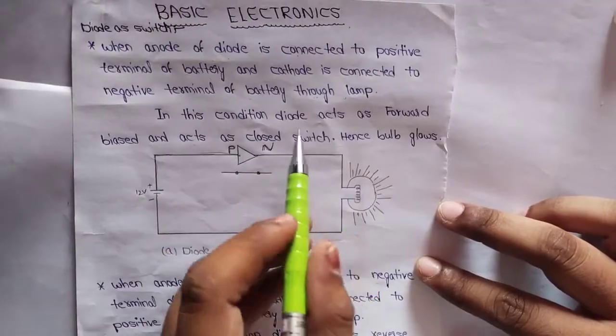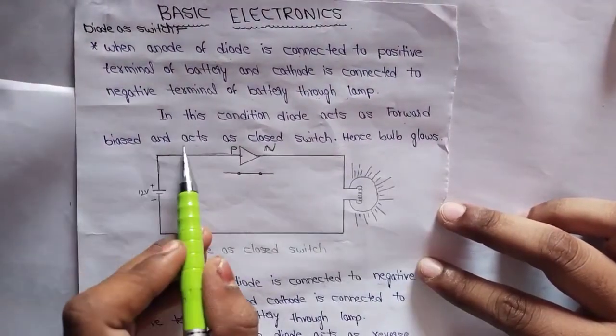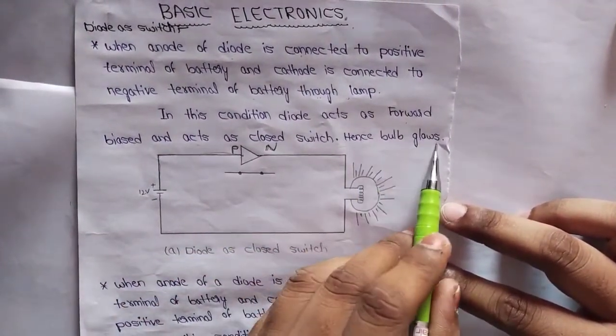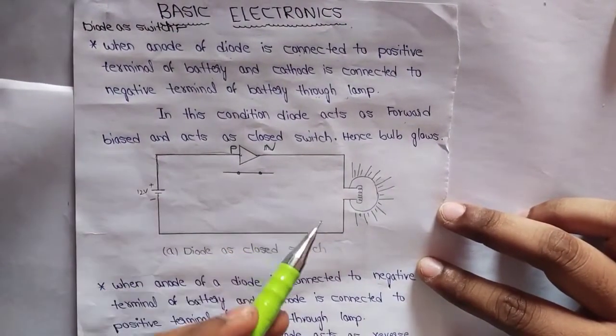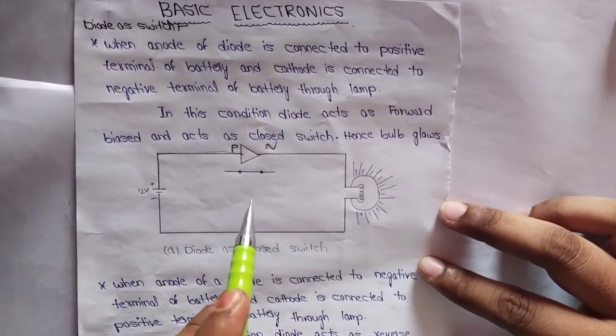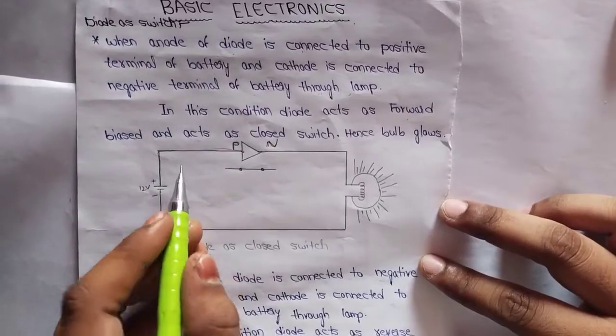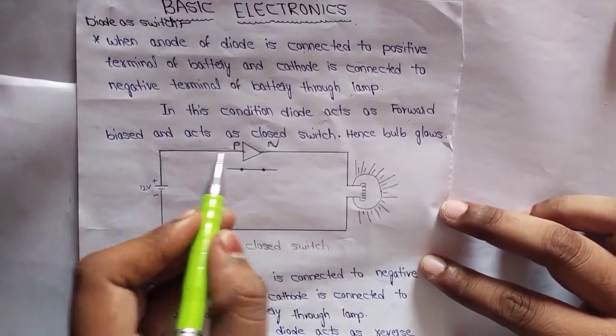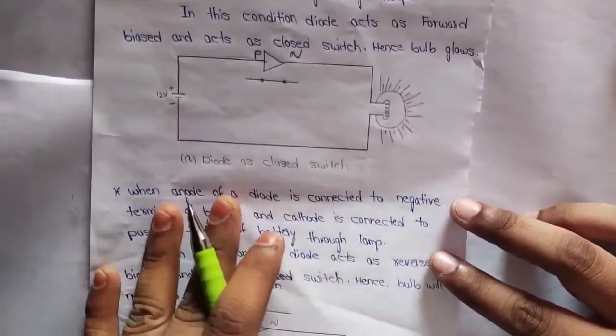In this condition, the diode acts as forward biased and acts as a closed switch. Hence, the bulb will glow. So current will flow through this circuit and bulb will glow.